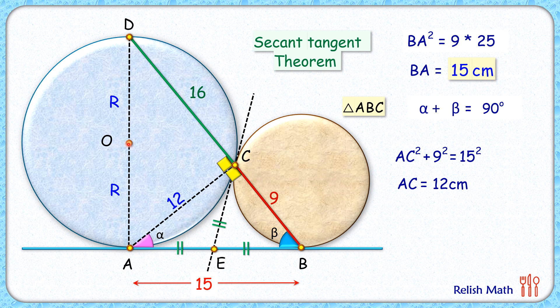Now triangle DAC is a right-angle triangle. Applying the Pythagorean theorem, we get hypotenuse squared, that is (2R)² = 16² + 12². Solving, we get the value of 2R as 20 centimeters and R as 10 centimeters. And that's our answer.